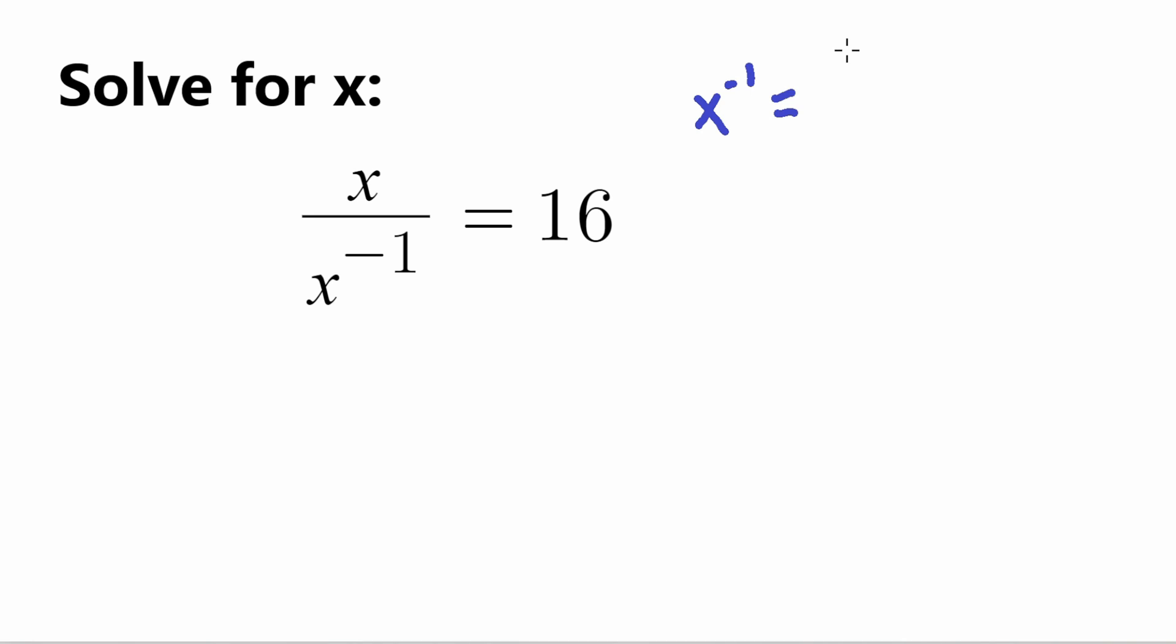Well, X to the negative 1 - anything that is to a negative power, that is the equivalence of 1 over X to that same power to the opposite number here. So this negative 1, the opposite number of negative 1 is 1, so X to the negative 1 equals 1 over X to the 1.